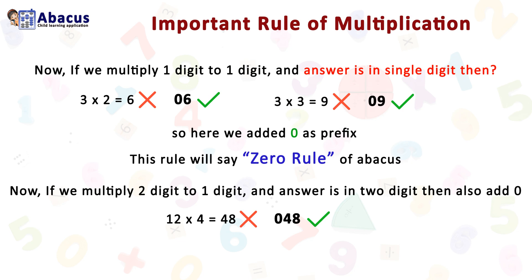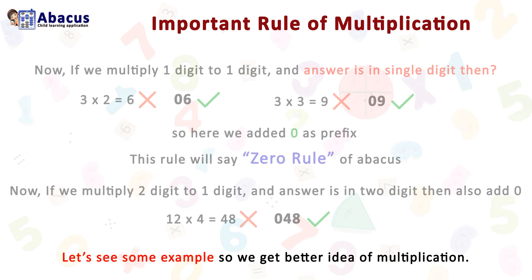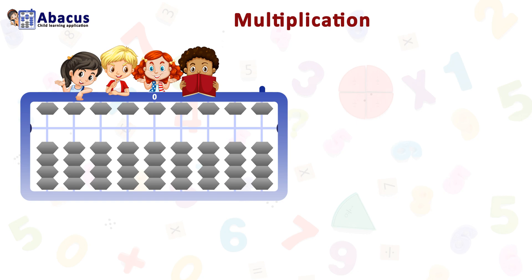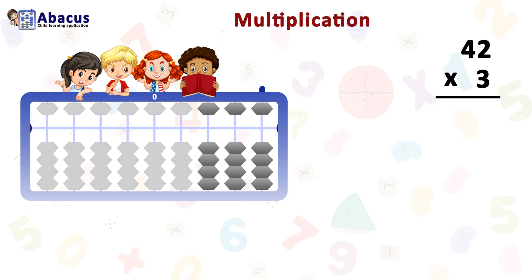Let's look at some examples to get a better idea of multiplication. First, I will take a two-digit by one-digit multiplication, giving a total of three digits. I will take 42 multiplied by 3. On the abacus, we have a total of three numbers, so the answer is also in three digits. We use the first three rods: ones, tens, and hundreds rods.